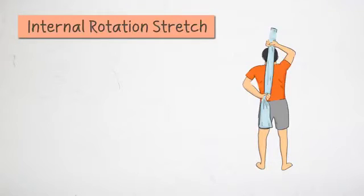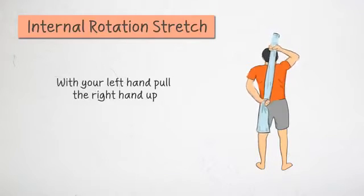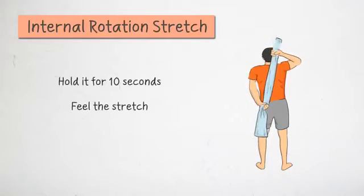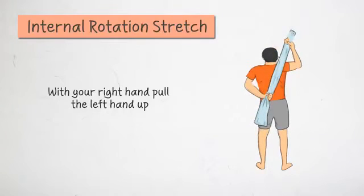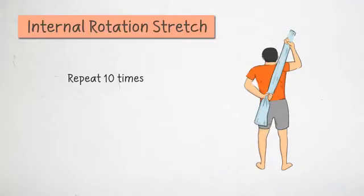Internal rotation stretch. Hold the towel in both hands. With your left hand pull the right hand up. Hold it for 10 seconds. Feel the stretch. With your right hand pull the left hand up. Repeat 10 times.